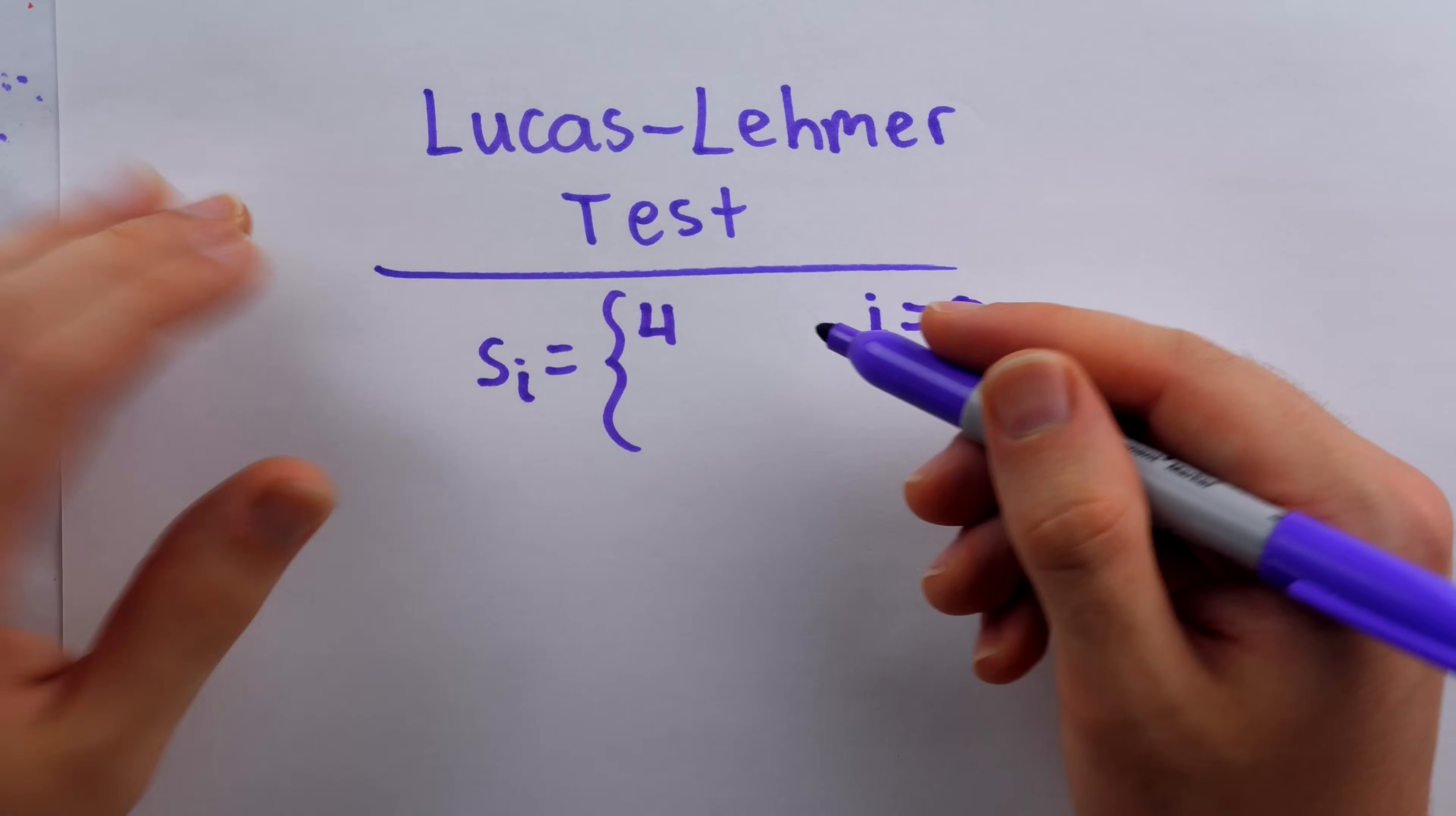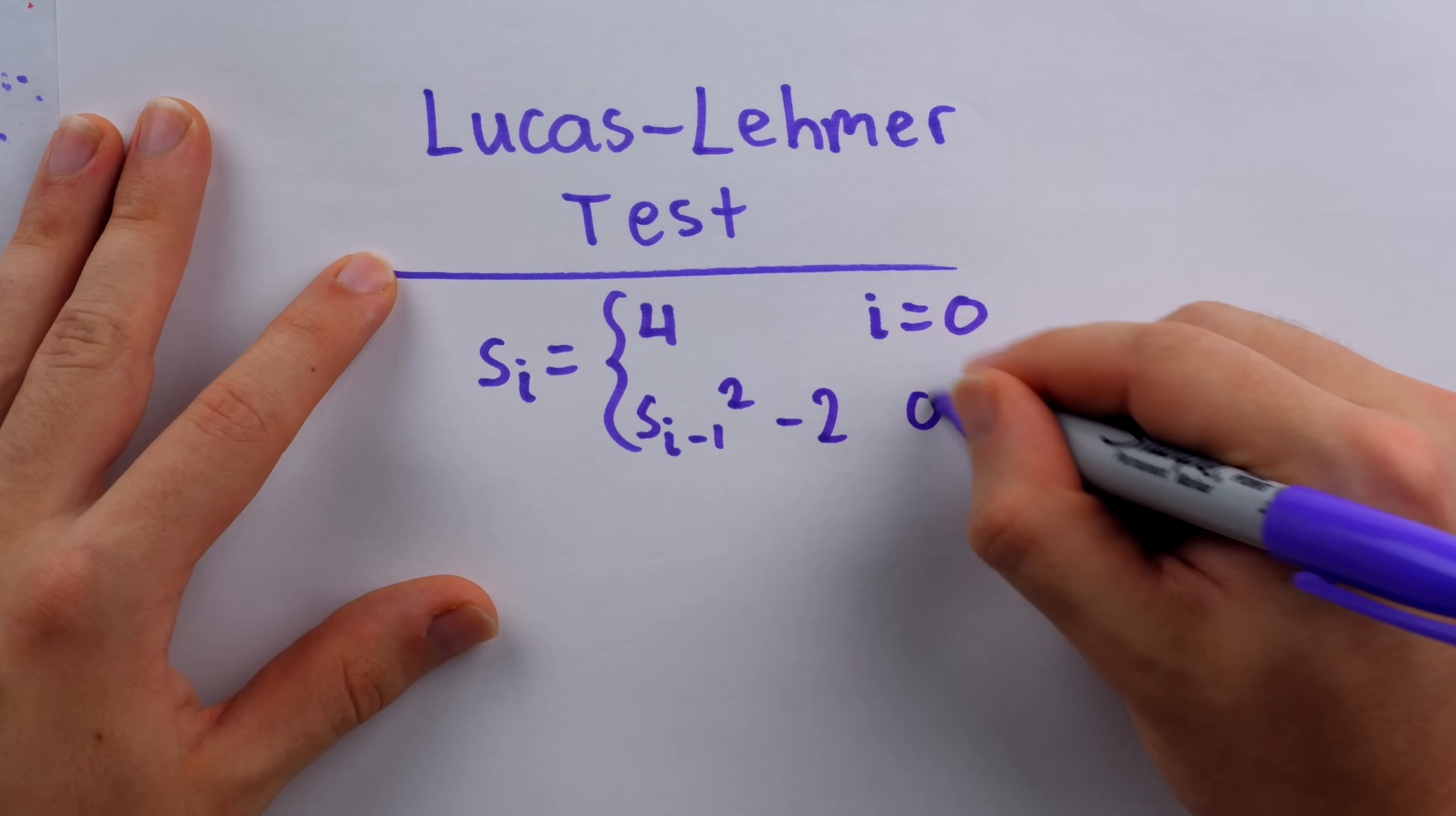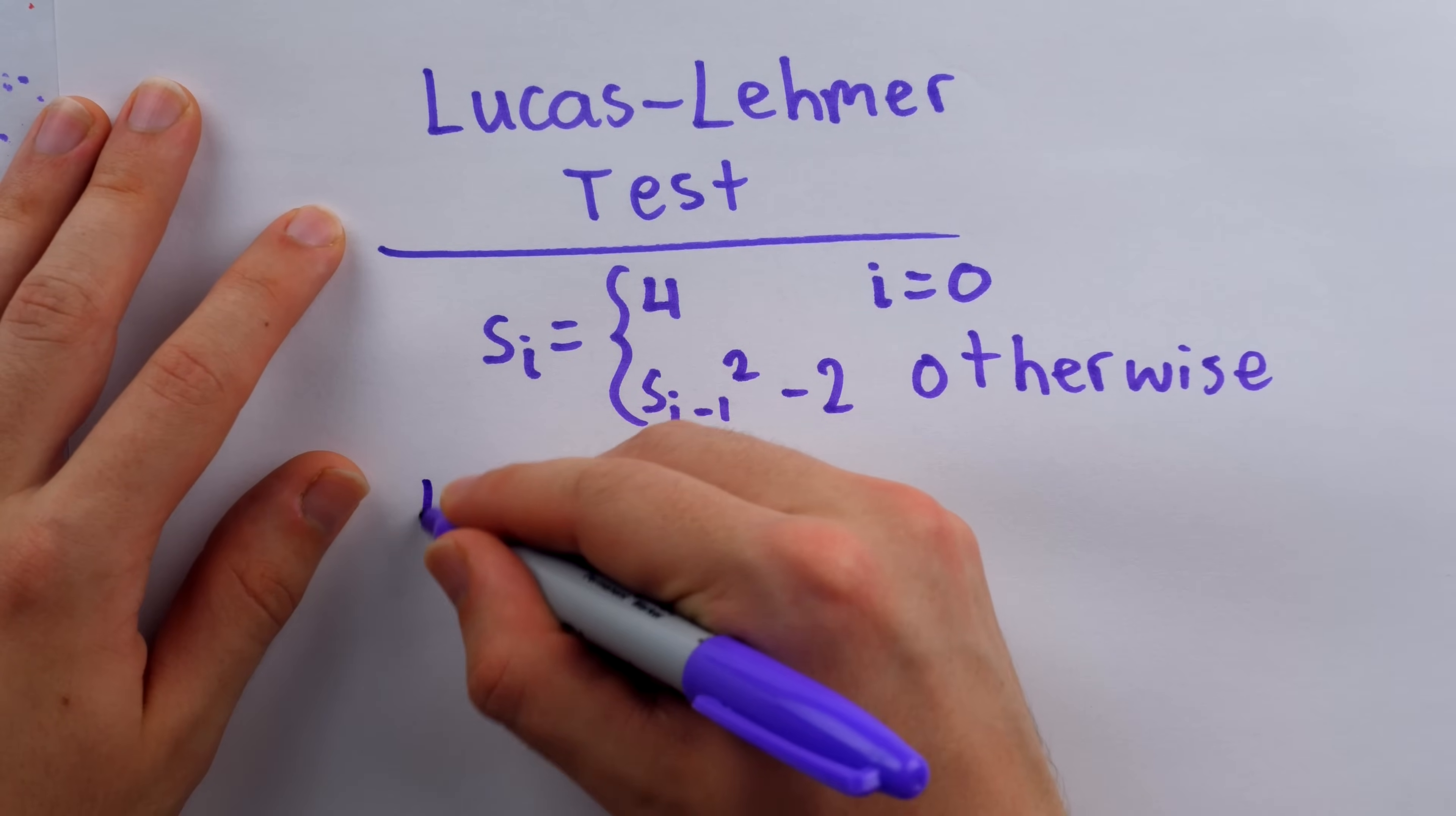Otherwise, we can calculate subsequent terms based on preceding terms, just like this. S_i minus one squared minus two. So to calculate subsequent terms, you take the preceding term, square it, and subtract two.